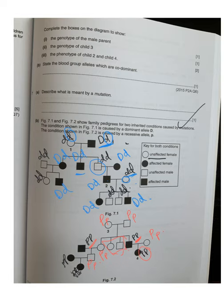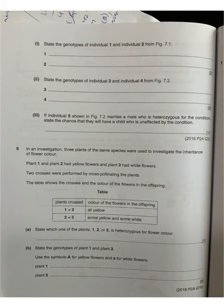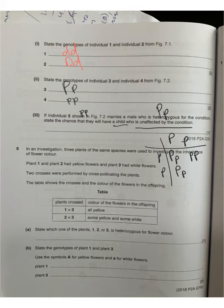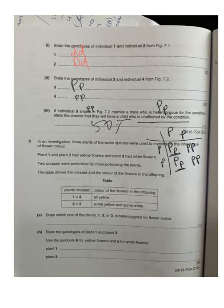In 7.1, individual one is small d small d and individual two is heterozygous. Individual three is heterozygous and individual four is small p small p. Individual five is affected, so it is small p small p. If individual five marries a heterozygous male, doing the Punnett square gives big P small p, small p small p, big P small p, small p small p — so the chance of an unaffected child is 50%.